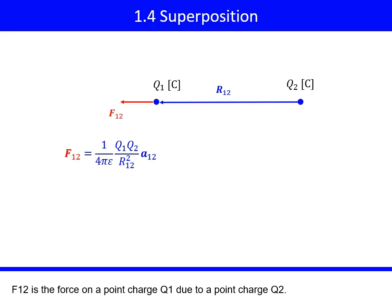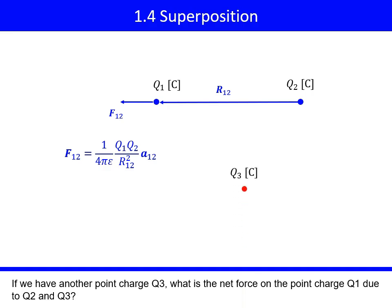F12 is the force on a point charge Q1 due to a point charge Q2. If we have another point charge Q3, what is the net force on the point charge Q1 due to Q2 and Q3?